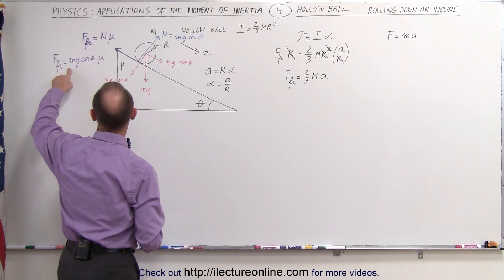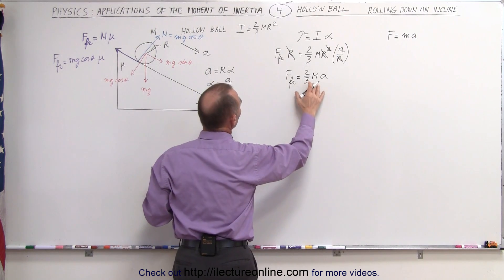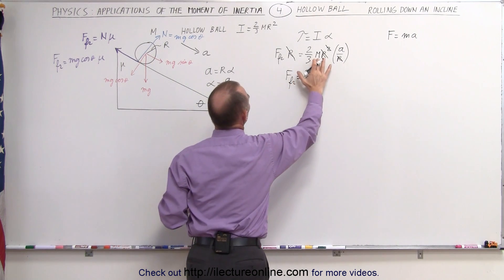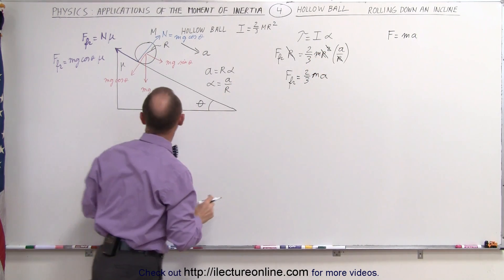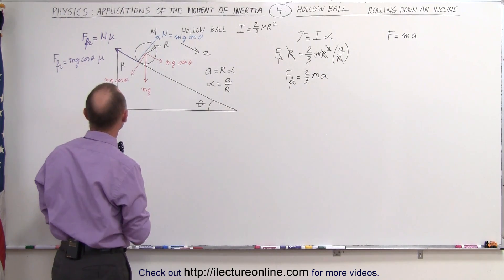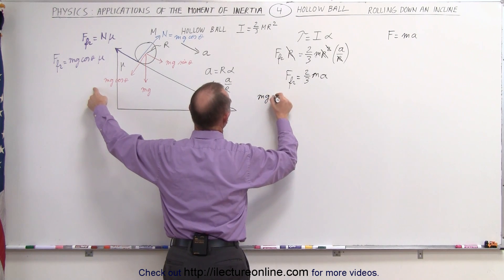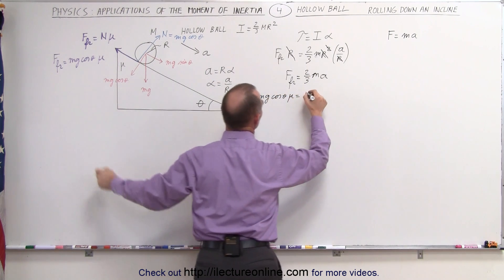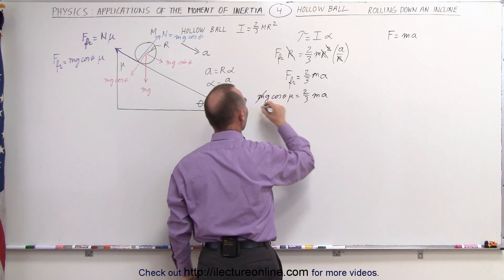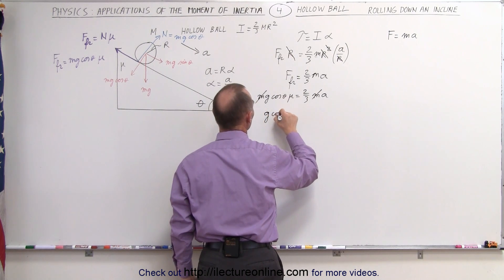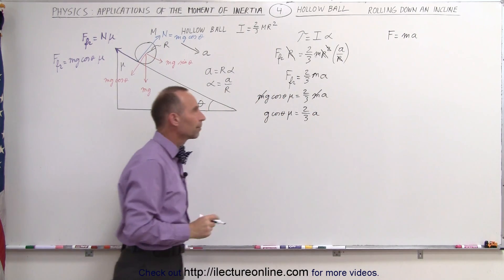Substituting for the friction force, using small m for the mass of the ball, we write: mg cosine of theta times mu equals two-thirds ma. We can see there is an m on both sides, so it cancels, giving us g times cosine of theta times mu equals two-thirds times acceleration down the incline.